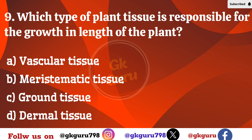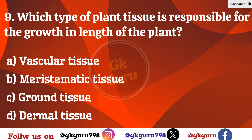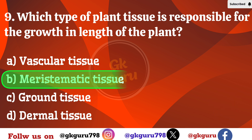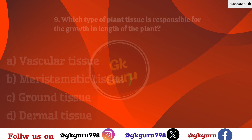Ninth question: Which type of plant tissue is responsible for the growth in length of a plant? Option A: muscular tissue. Option B: meristematic tissue. Option C: ground tissue. Option D: dermal tissue. Correct answer: Option B, meristematic tissue.